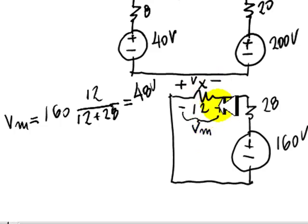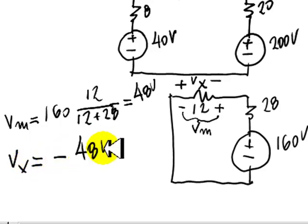So that means that actually Vx is negative 48 volts. And there is a solution to that one.